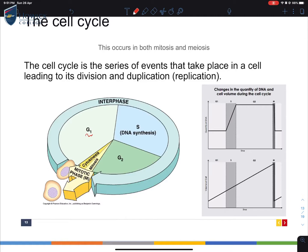If you have a look at the graph on the right, you can see the changes in the quantity of DNA and cell volume during the cell cycle. The quantity of DNA, say we have 46 chromosomes in G1. Close to the end of G1, you start seeing this line start rising and you're going to end up with this S phase.